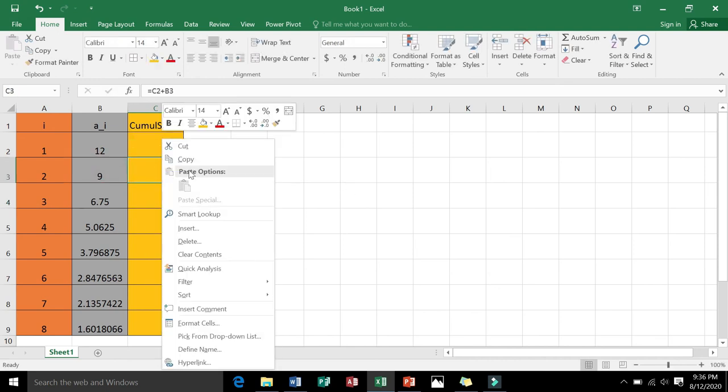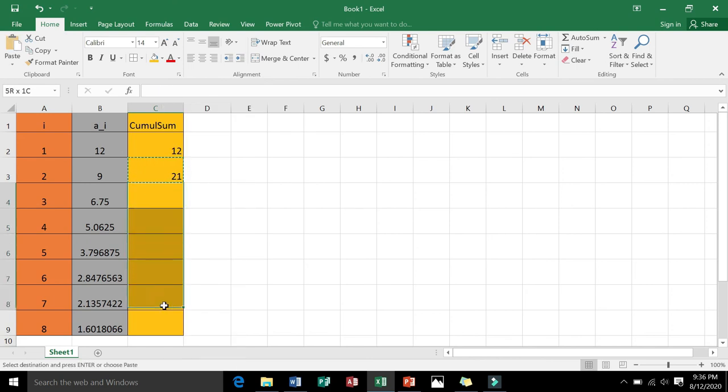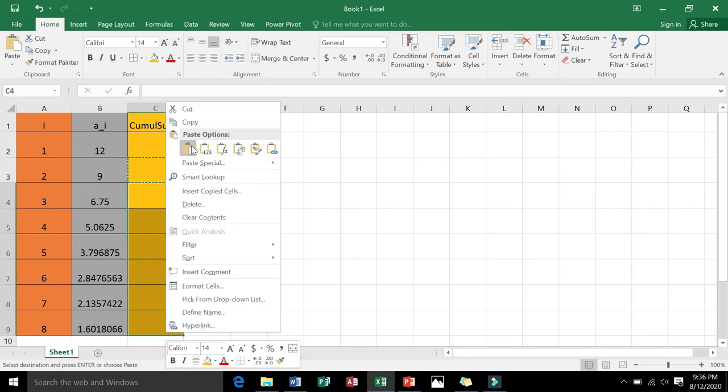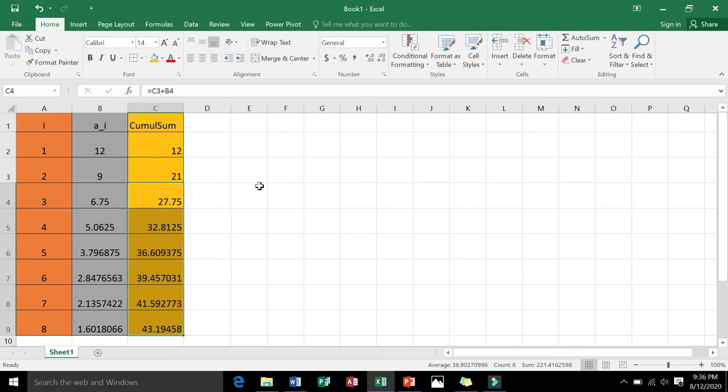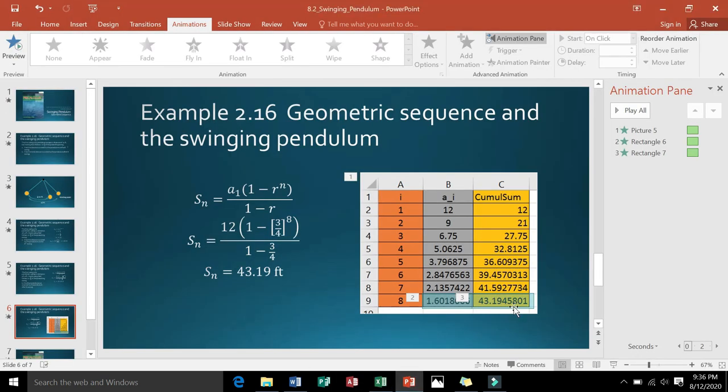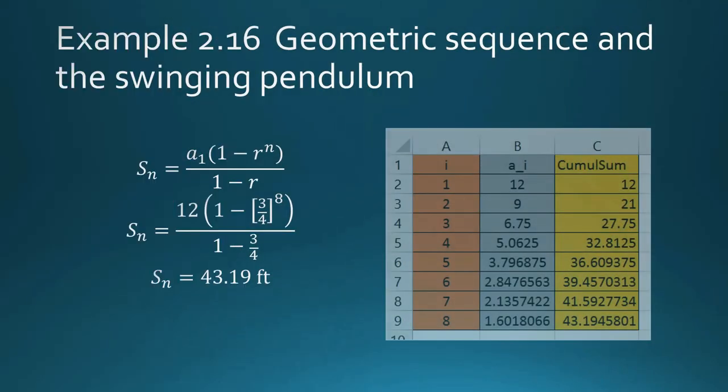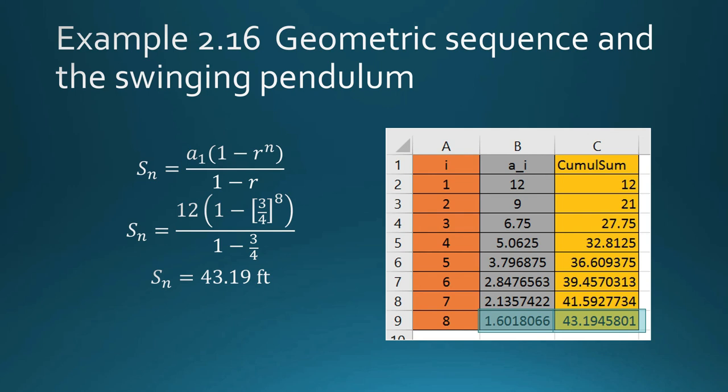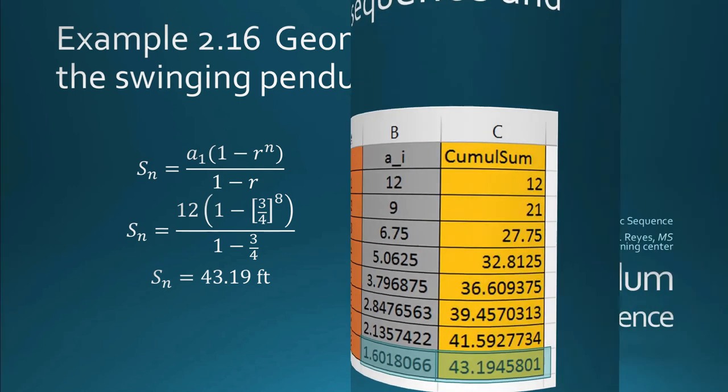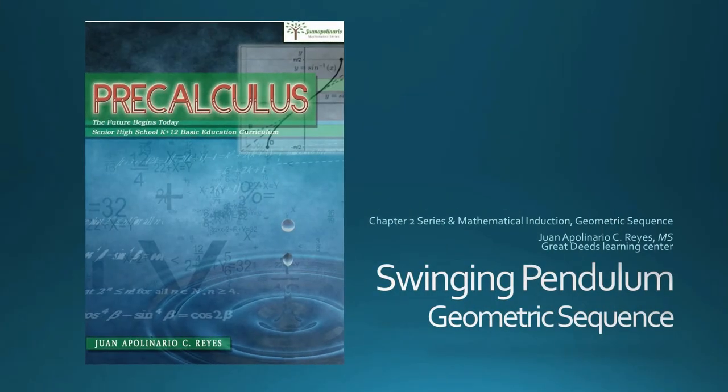Now what do I do next? Copy and paste. Copy and paste. So this is what we got from our computation, 43.1 feet. Let us check. That's it, 43.19 feet. So you can use Excel to verify your computations, especially when you are working with sequence.